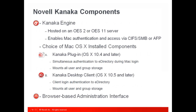Let's take a look at the main components that comprise Novell Kanaka for Mac. First, there's the Kanaka engine, hosted on either OES 2 or an OES 11 server, and it enables Mac authentication and access via CIFS, SMB, or AFP protocols. On the OS X workstation or laptop, there's a choice of two components to install based on your authentication needs. First, there's the Kanaka plug-in, supported on OS X 10.4 or later, which provides simultaneous authentication to eDirectory during Mac log-on, and mounts all user and group storage. Then the Kanaka desktop client is supported on OS X 10.5 or later, and provides client login authentication to eDirectory and also mounts all user and group storage. The last component is the browser-based interface used for configuring and managing Novell Kanaka for Mac.